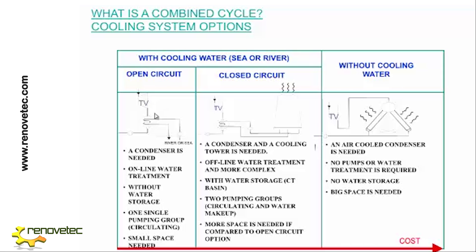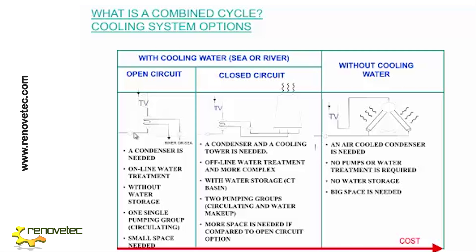Why do we need to condense the steam? We need to condense the steam because we need to pressurize the water. In the HRSG, we increase the temperature but we do not increase the pressure. We increase the pressure with the pump, and then in the boiler we increase the temperature. It is better to condense because increasing the pressure of steam is very expensive, while increasing the pressure of liquid water is very cheap, as there is no change in volume.